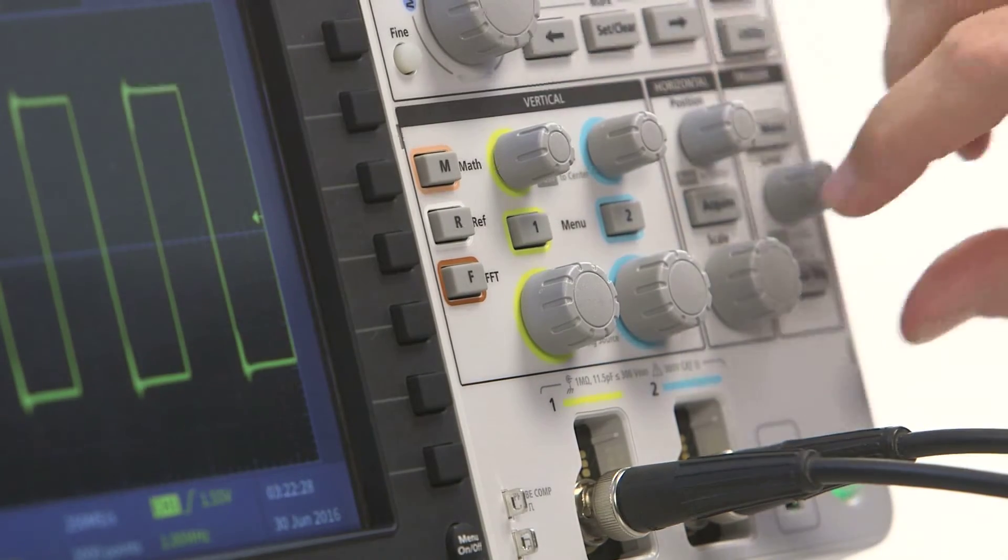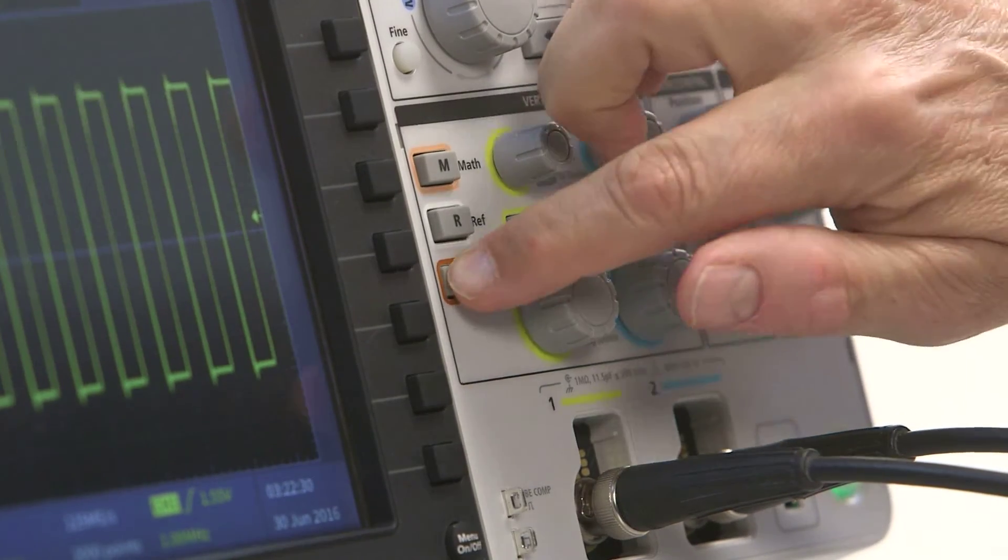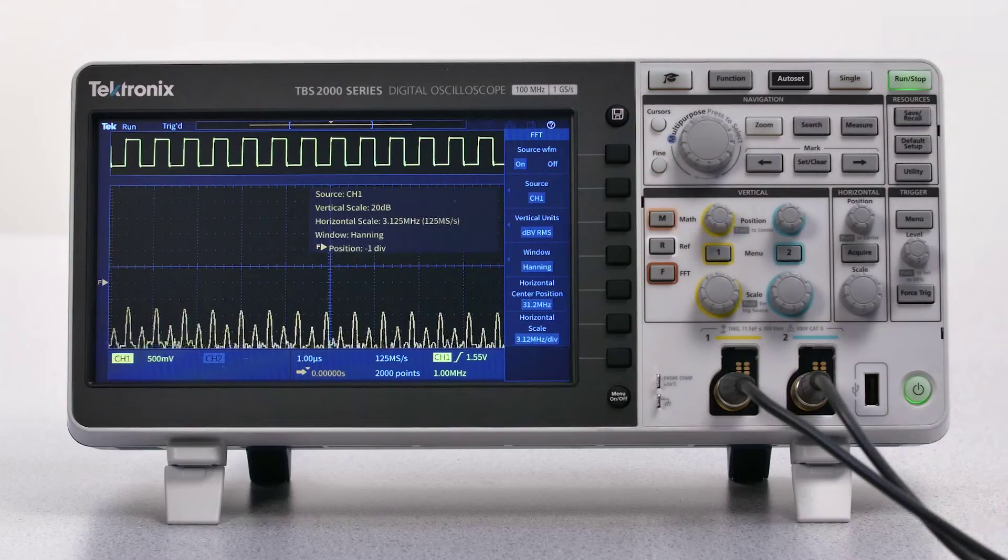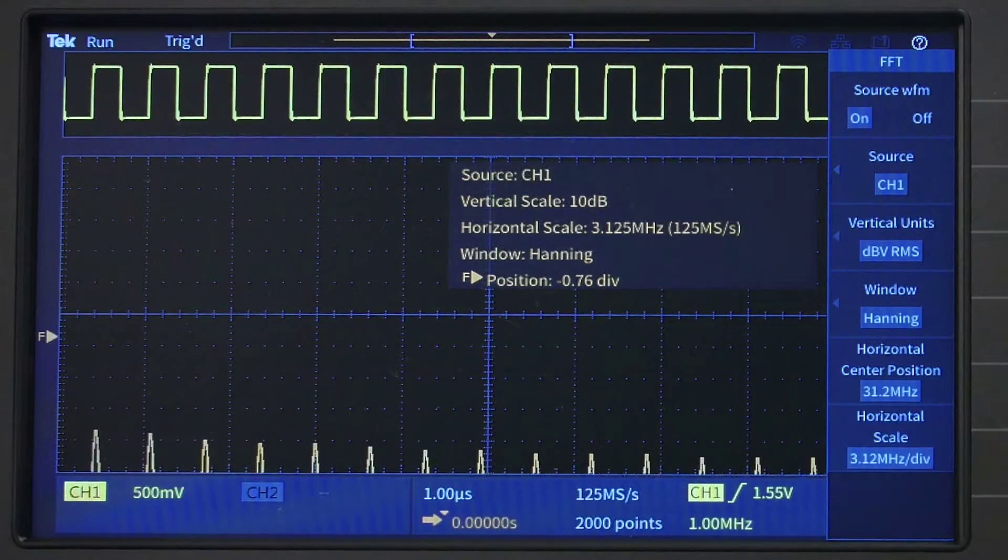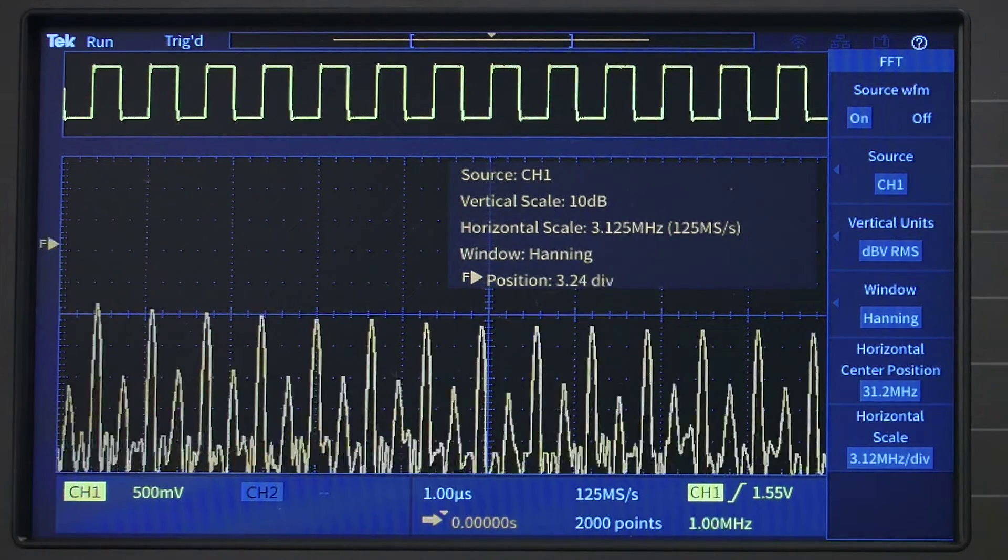Press the FFT button to quickly see the frequency spectrum of your signal. The time domain source waveform can be displayed above the frequency spectrum, and a transparent readout shows scale factors and important settings.